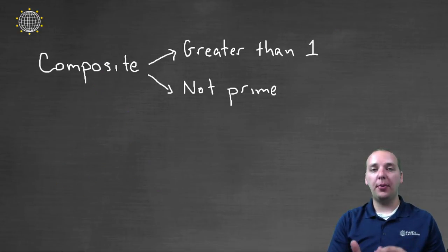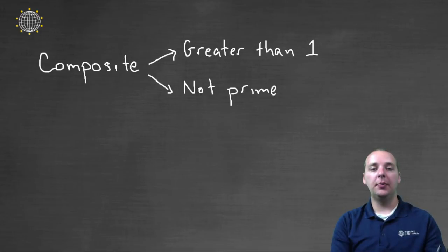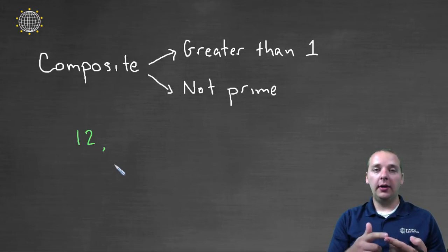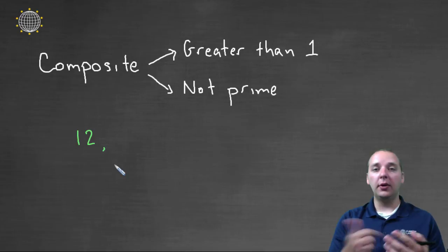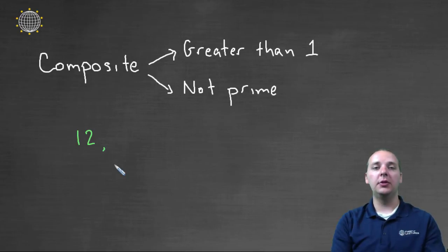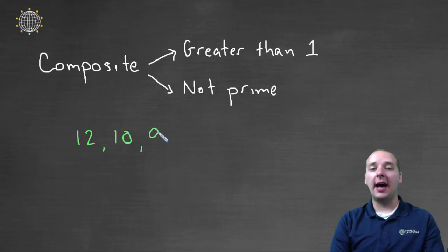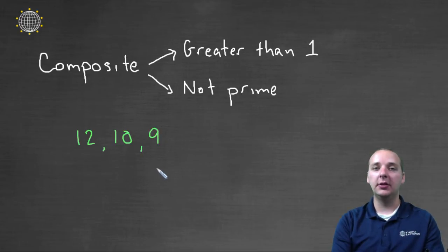Now if your number's not prime, and it's greater than one, then we call it a composite number. So examples of composite numbers would be like twelve, because twelve has factors of one, two, three, four, six, and twelve — it's got a lot of factors, it's greater than one, and it's not prime. So is ten, and even nine is composite, because it's three times three — it has more factors than just one and nine, and so on and so forth.